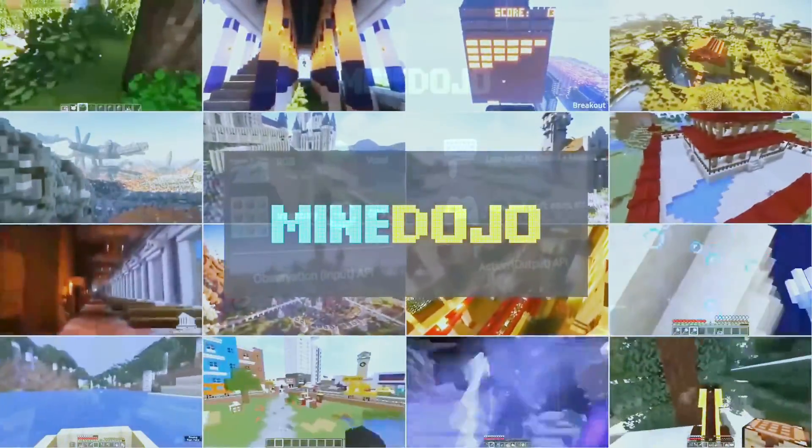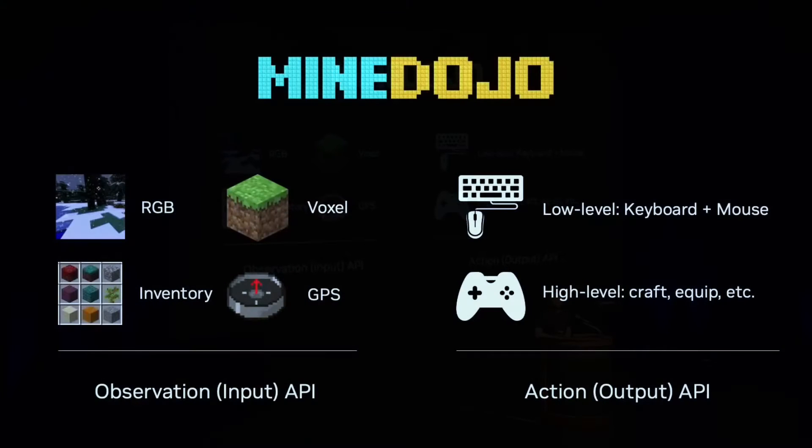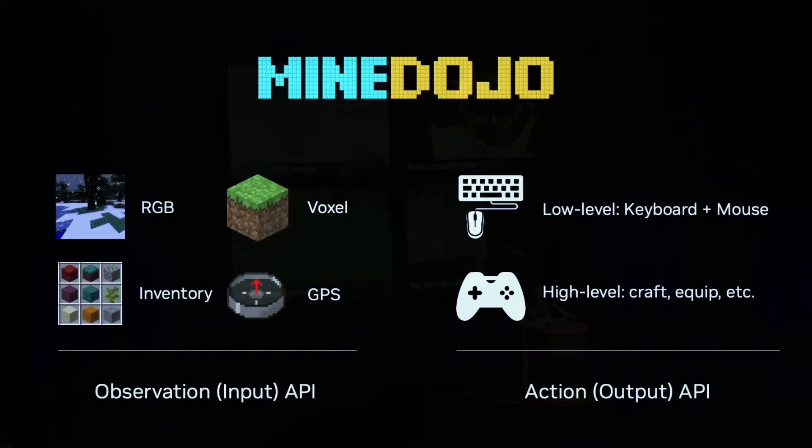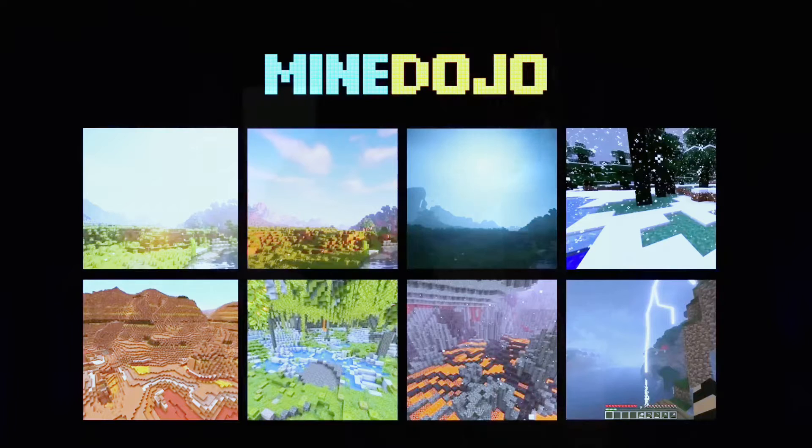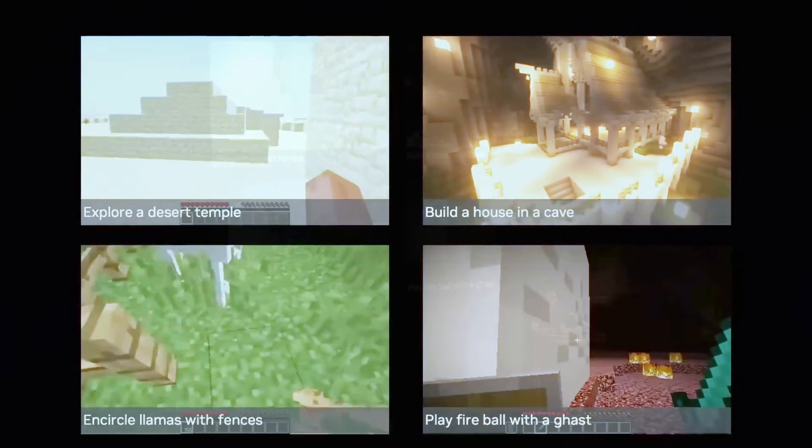MindDojo has three parts: a simulator, a database, and an agent. Here we design a simulator API to unlock the full potential of the game for AI research. For example, we want the agent to build a house. The best way to do it is to learn through data so that the abstract concept of a house can be captured.